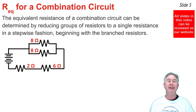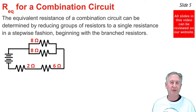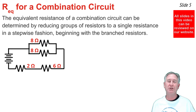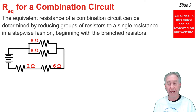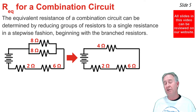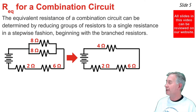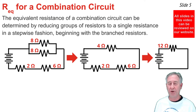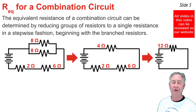In the first example, 8 ohms and 8 ohms are connected in parallel, and 2 ohms and 6 ohms are in series. Starting with the parallel 8-ohm pair: 1/8 plus 1/8 equals 2/8, and the reciprocal gives 4 ohms as their equivalent resistance. That 4 ohms is now in series with the 2 ohms and 6 ohms, so the total is 4 plus 2 plus 6 equals 12 ohms — the equivalent resistance of this combination circuit.